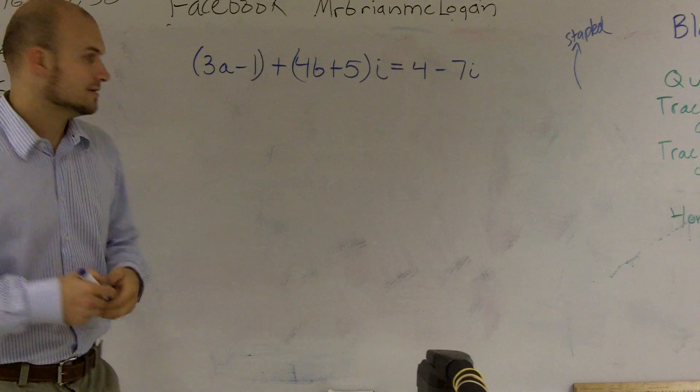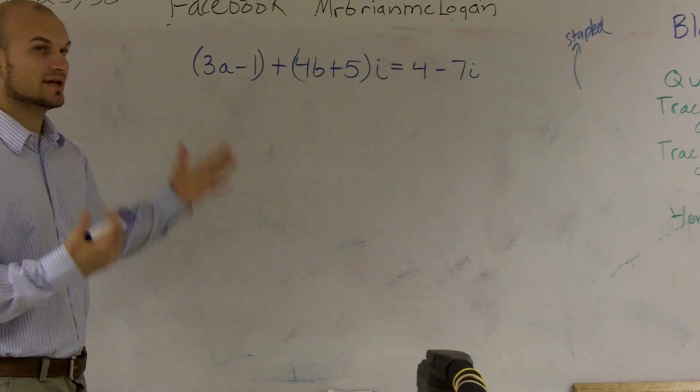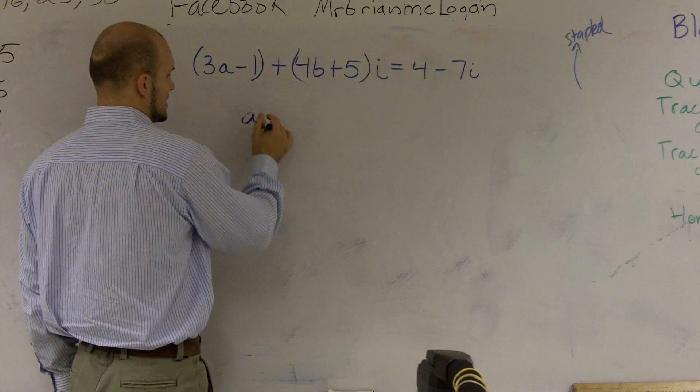In your book and in your outline, what we talked about is complex numbers in standard form, which is a plus bi.